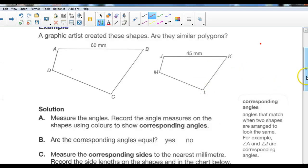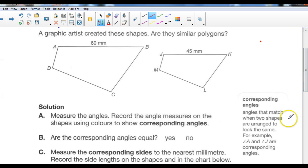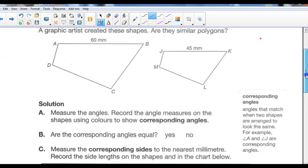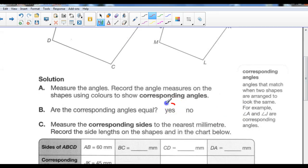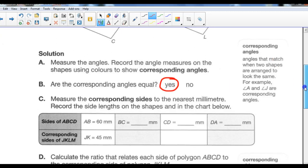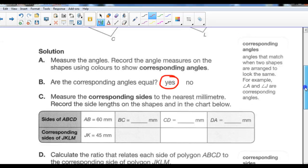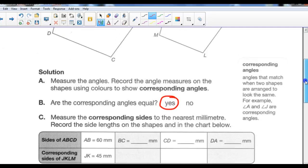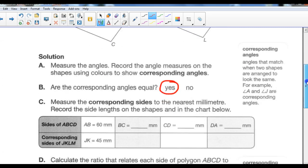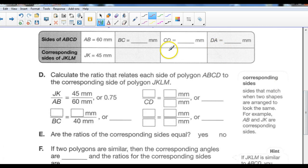If all the angles are the same, if the angles match up, then they're corresponding. So are the corresponding angles equal? Are all the angles equal? If you take your protractor, you'll find that the answer is yes. They are all equal. They're all the same. So measure the corresponding sides to the nearest millimeter, record the side lengths and the shape in the chart below. So we got AB is 60, JK is 45. Measure BC and KL. Measure AD and JM, and measure ML and measure DC. So you can put that in this chart right here.